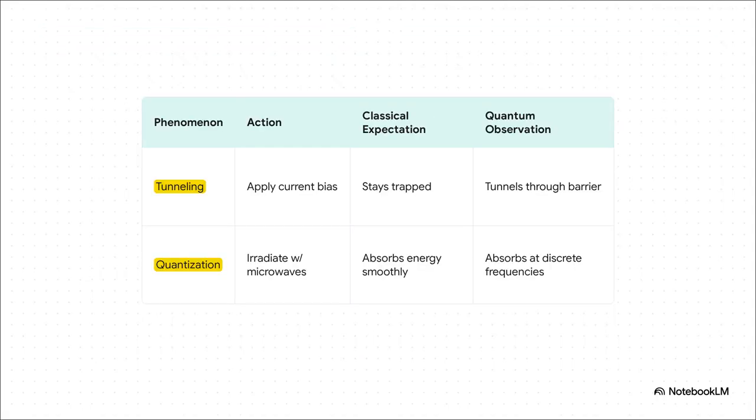This table just lays out their two incredible findings so well. As you can see in that top row for tunneling, what they observed completely contradicted what classical physics expected. But they didn't stop there. Check out the second row, on quantization. They decided to zap the circuit with microwaves. Now, classically, it should have just absorbed that energy at any old frequency. But instead, it only absorbed energy and escaped at very specific, discrete frequencies. It was like a radio locking onto a single station. And that was the final proof. It had distinct energy levels. They had, without a doubt, built a true artificial atom.